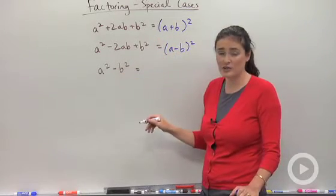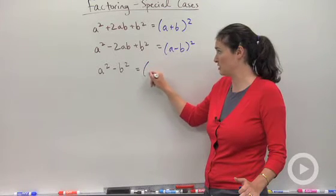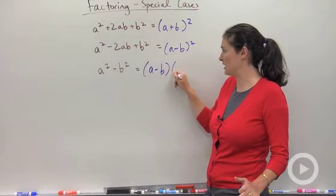This right here, this third one, is called difference of perfect squares. Difference meaning it's a subtraction problem. The way you factor it looks like this.